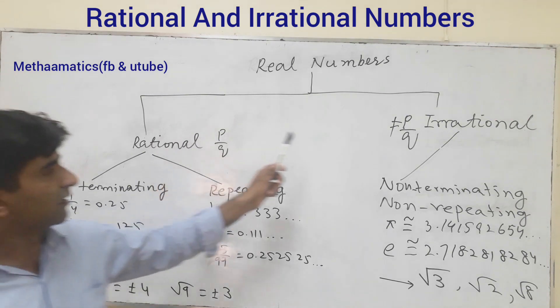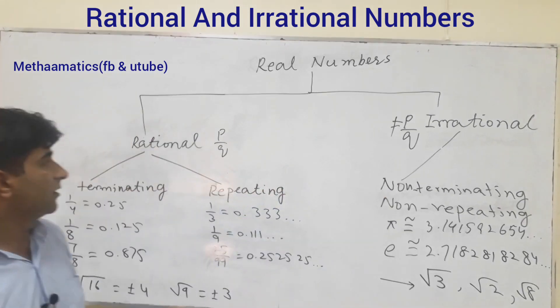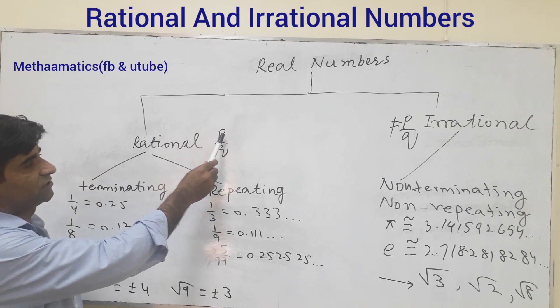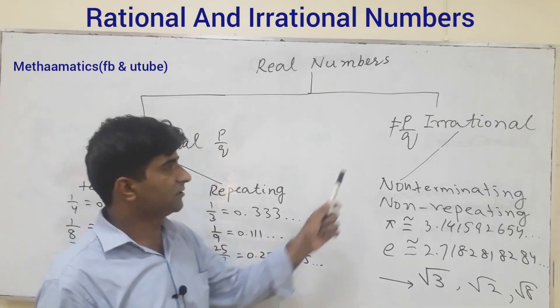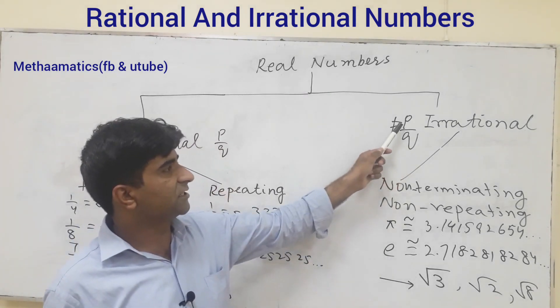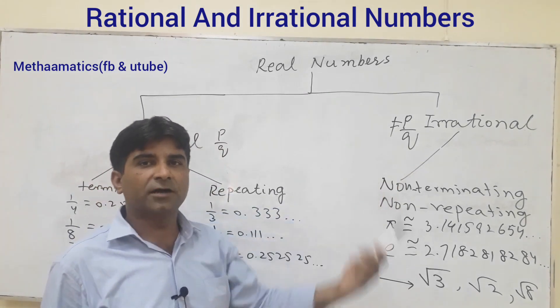One is rational number, another is irrational number. Rational numbers are those numbers which can be written in P upon Q form, while irrational numbers are those numbers which cannot be written in P upon Q form.